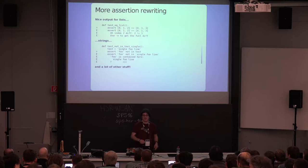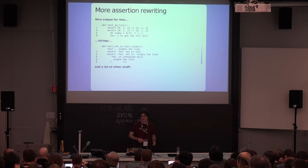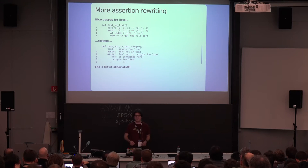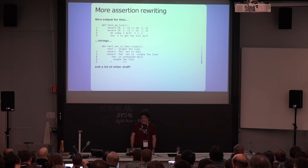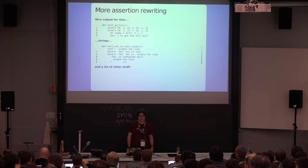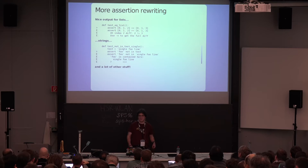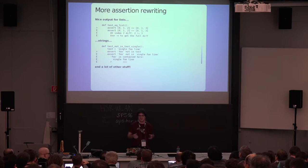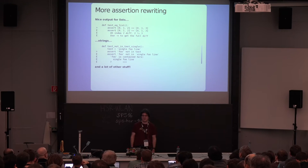Depending on what data types are involved in your assertion, you get an even nicer output. Here I have two examples: one with a list where it tells you at which index the comparison failed, and with a string and a 'not in' assertion, where it tells you that you said this shouldn't be in this string, but it was found at this position — which is very useful information to debug an issue.